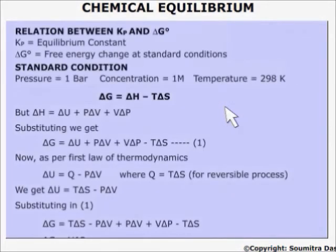What is more important is to find a relation between the chemical equilibrium constant and the free energy change at standard condition, where standard conditions means 1 atmosphere or 1 bar pressure, 1 molar concentration and 298 Kelvin temperature. What we know is that ΔG equals ΔH minus TΔS, where ΔH is equal to this. Substituting we get ΔG equal to this.